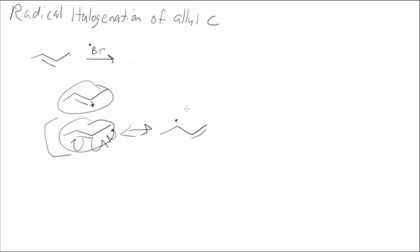If we have an allylic type position, that radical is going to be more stable. The electron density is delocalized and that gives it more stability. If I want to add this to radical stability, I'd say an allyl radical now is better or more stable than a tertiary radical, which is better than a secondary radical, which is better than a primary radical, which is better than methyl.